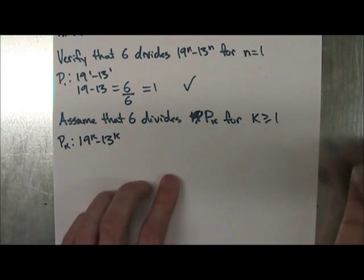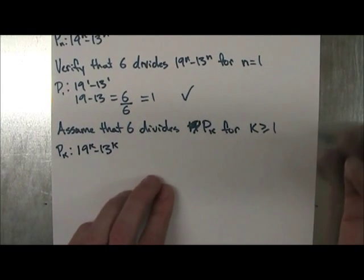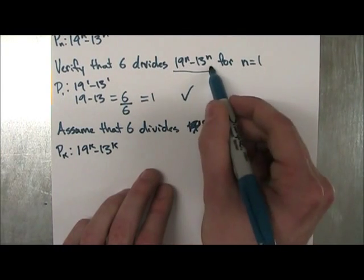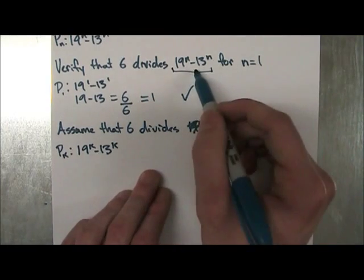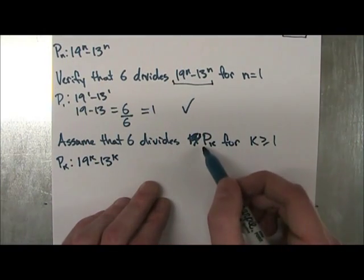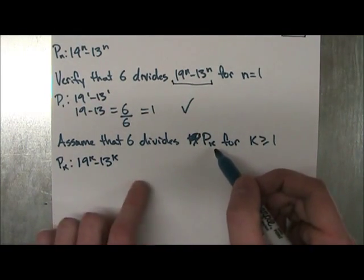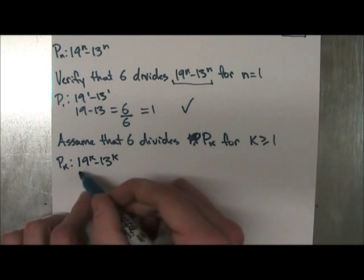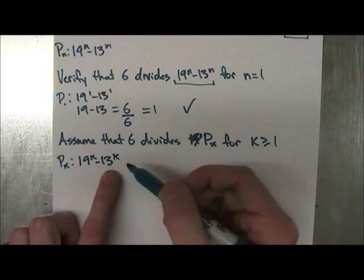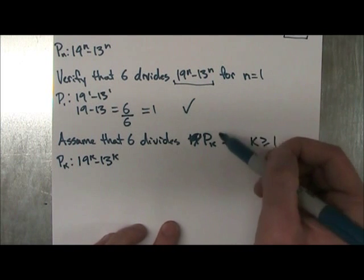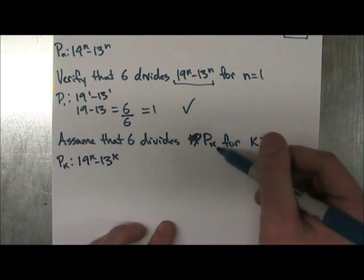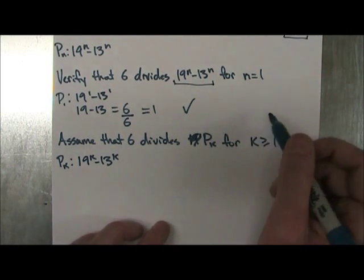Now you might have noticed, I don't know if this is confusing or have people wondering, but here I wrote the statement, but the statement is P_n. And here I wrote P_k, but the P_k is 19^k minus 13^k. So it doesn't matter which one you write as long as you write one. But I just write P_k, P_n because it's shorter usually.